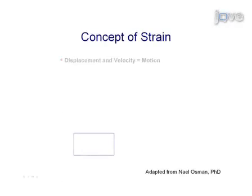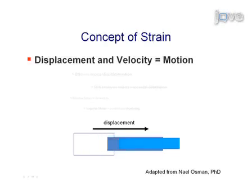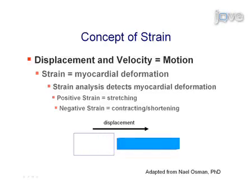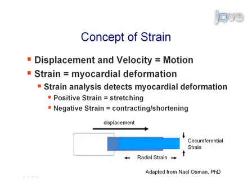The concept of strain is the deformation of an object normalized to its original shape, which is fundamentally important in the assessment of ventricular function. This video demonstrates a novel feature tracking technique for the assessment of circumferential strain using standard CINE sequences.